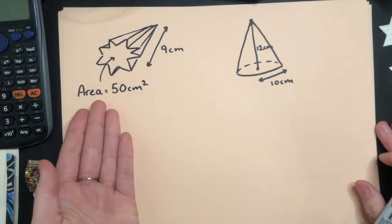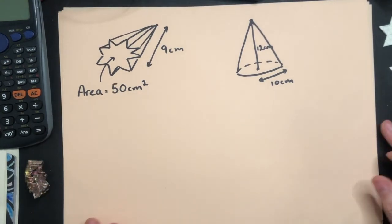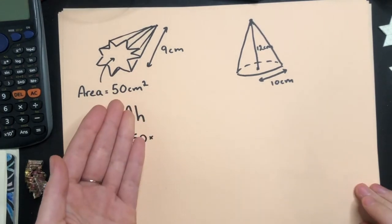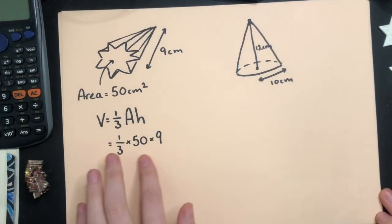Okay. So here we have a wonderful star-based pyramid. We're going to start with our formula. Then our substitution, the area is 50. The height is 9, even though it looks like it's going back. And since this is all multiply, I can do it whatever order I want.